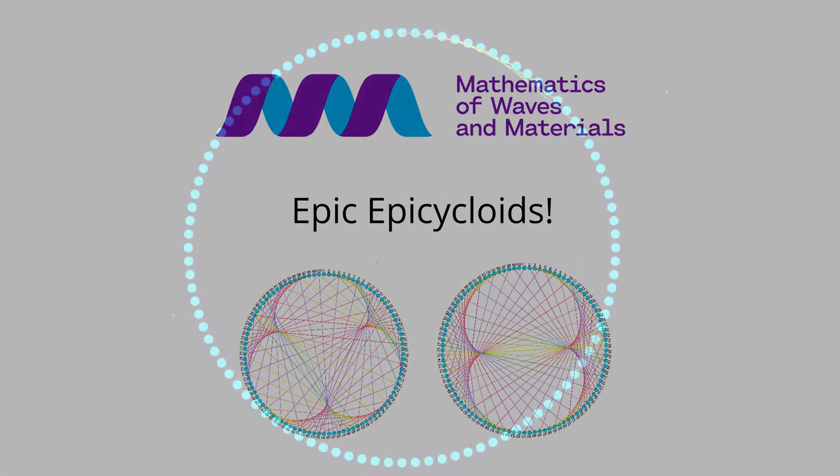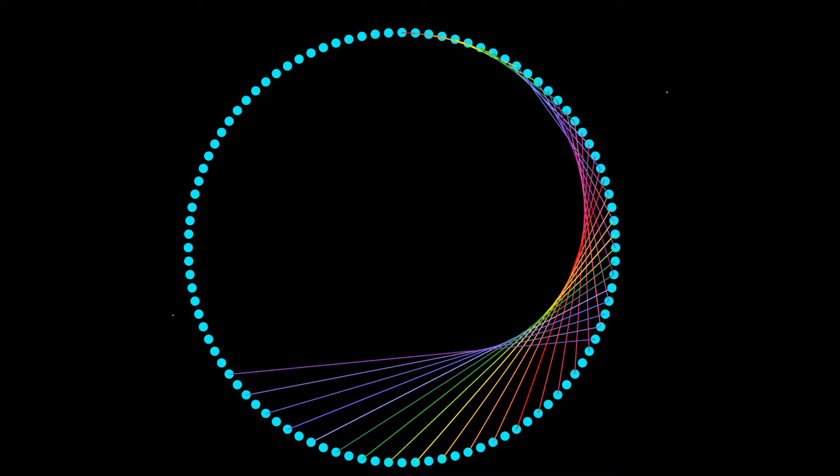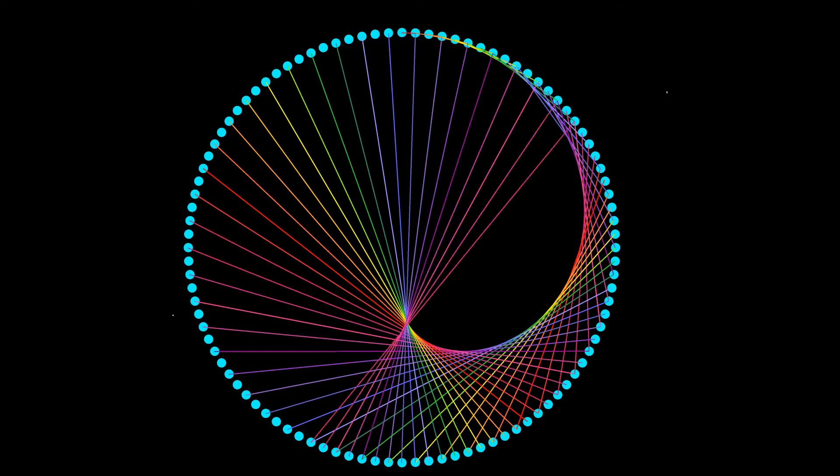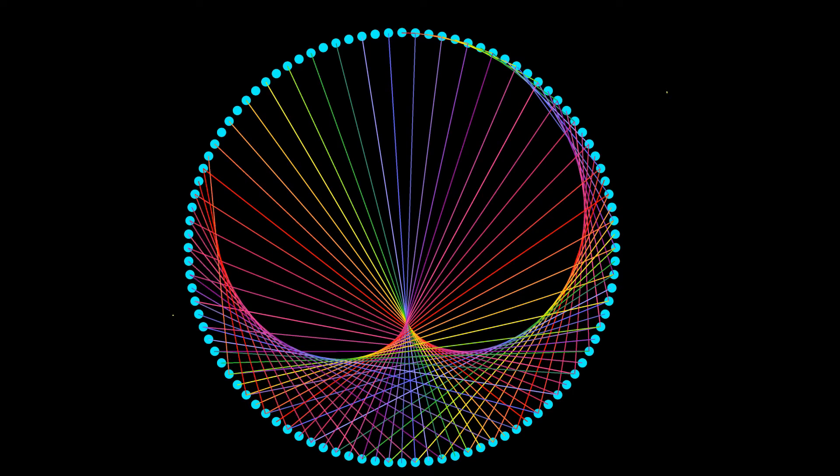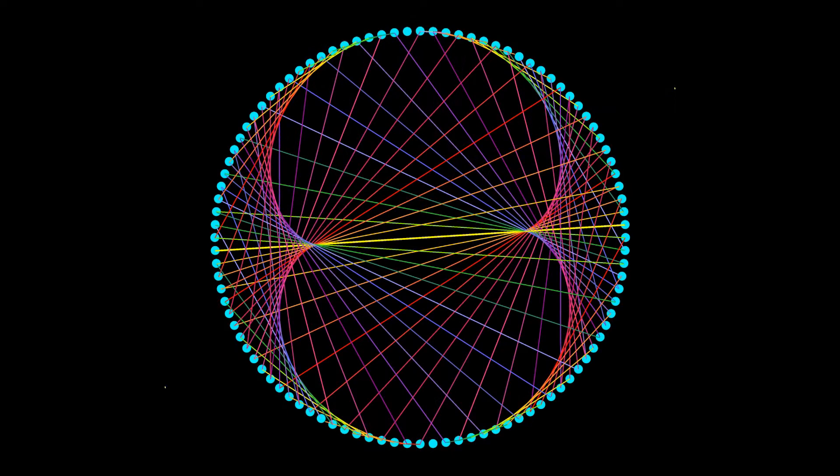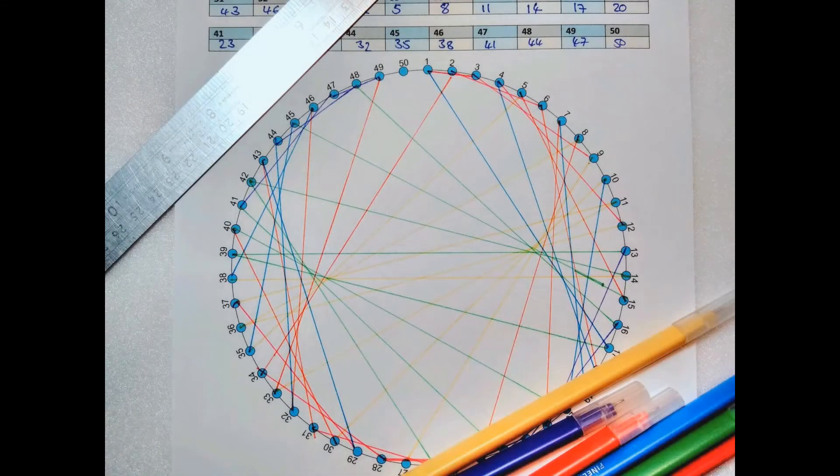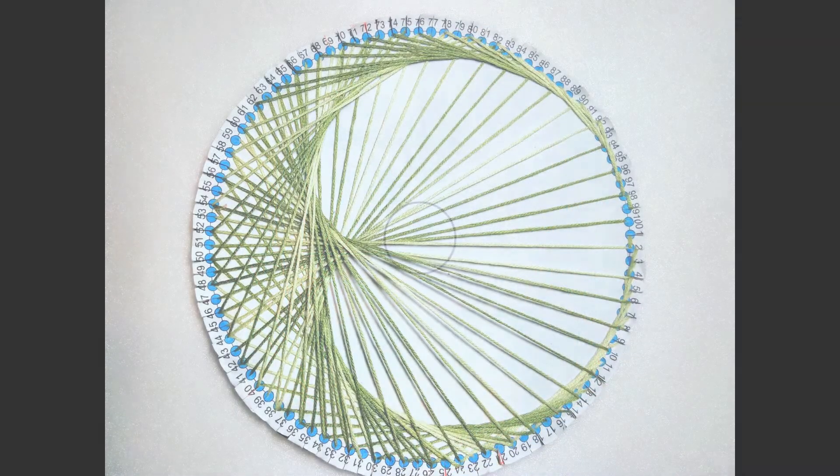In this activity you will create beautiful curved shapes from straight lines using mathematical mapping. The shapes you will make are called epicycloids. You can draw your epicycloid or make one from yarn or string.